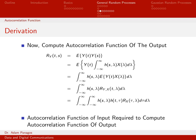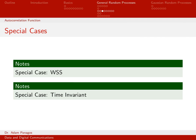Once we substitute the integral expression for r_{yx}, we end up with a double integral. We can write the output autocorrelation function as a double integral — all we need to evaluate it is the system impulse response (which may be time-varying) and the autocorrelation function of the input. This is a nice expression that directly gives us the output autocorrelation as a function of the input autocorrelation and the system. We'll now simplify it for the special case where the input random process is WSS (wide sense stationary).